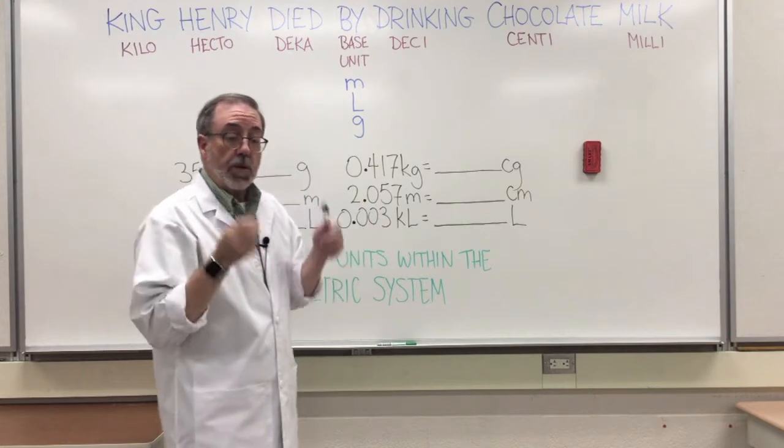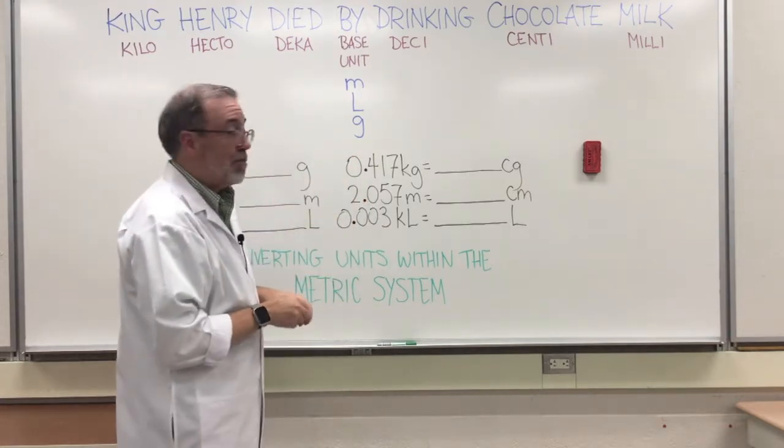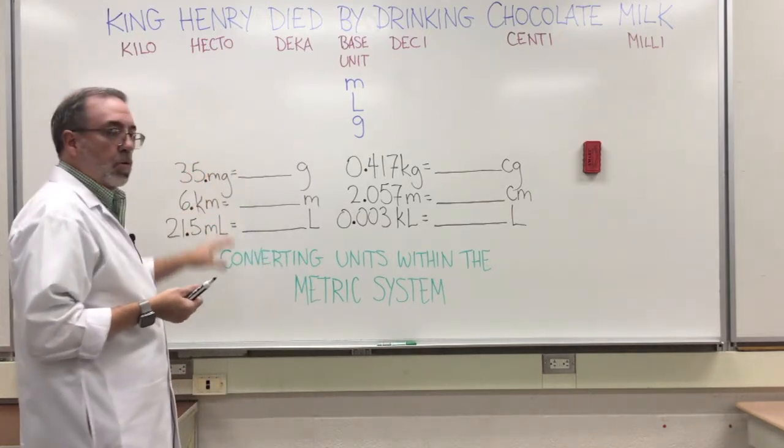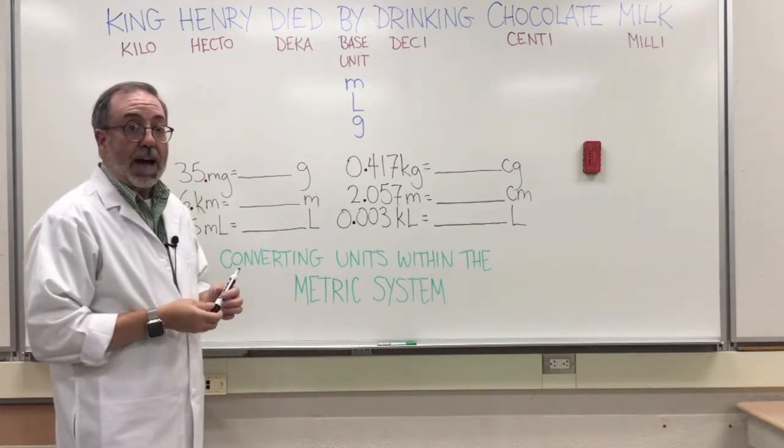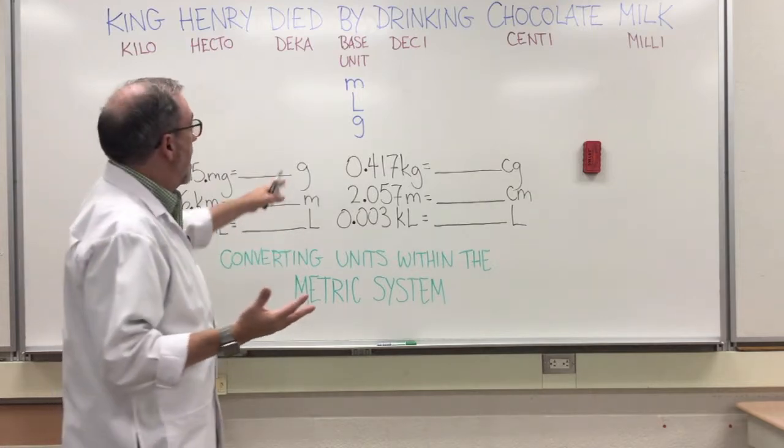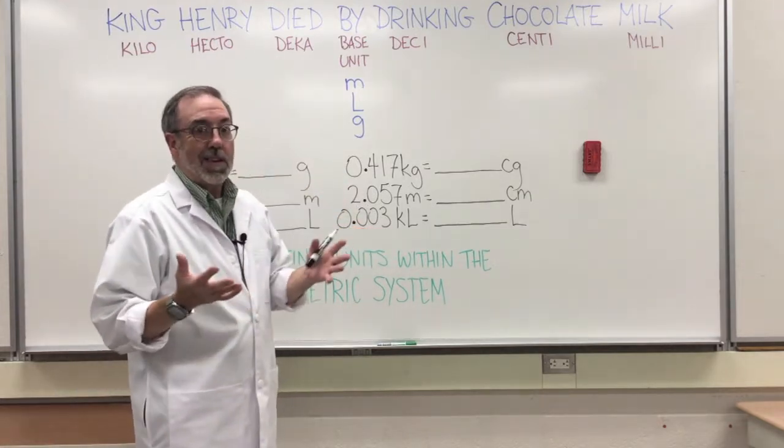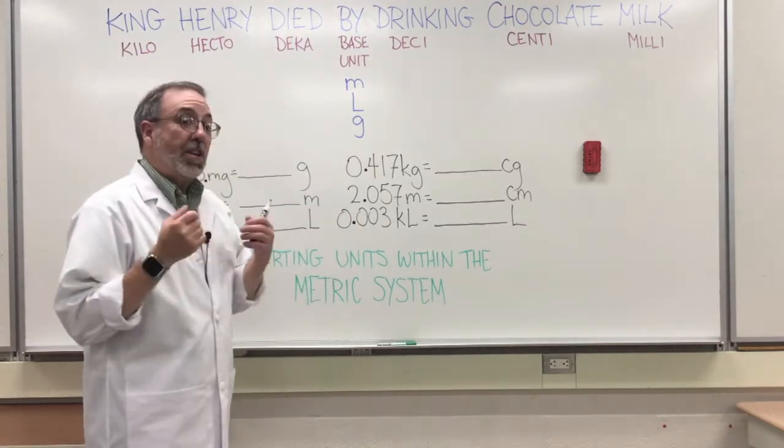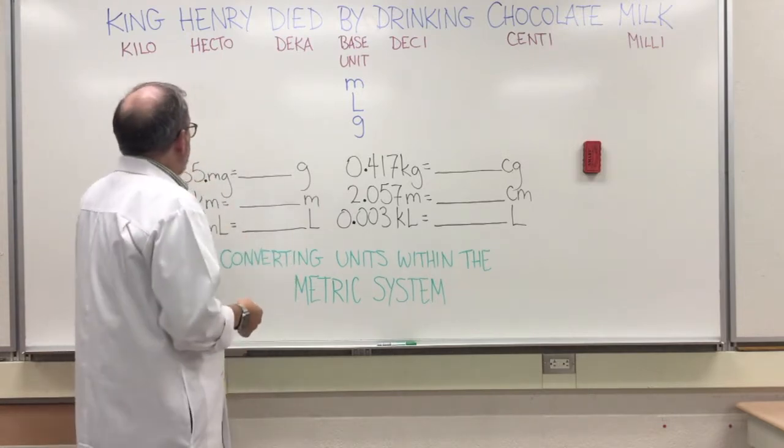So there's only two things, and with that I'll just give you some examples here. Let's start off with this first one. Now whenever you've got a whole number, it's very helpful to put a decimal after it. That lets you know that it's a whole number. You need to know where that decimal is so you know where to move it. So let's start this off - 35 milligrams. Well, that's down here, that's at milli. So we would go 35 with a decimal.